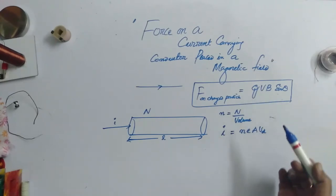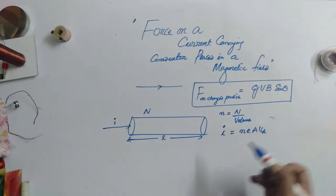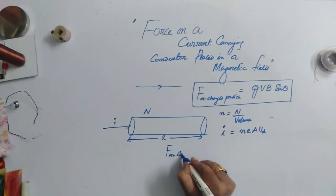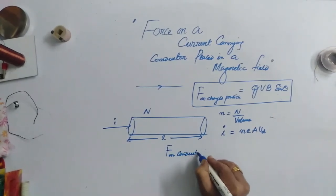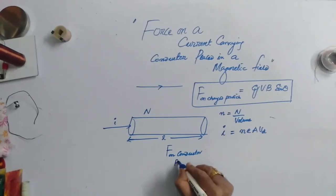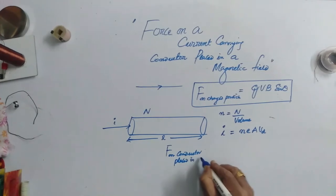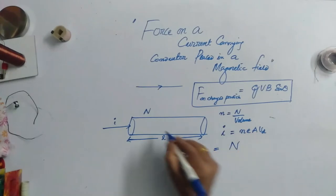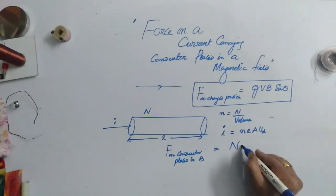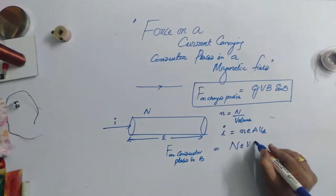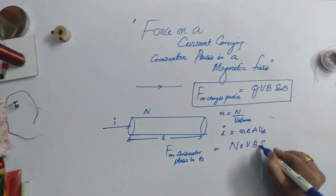Now in place of this Q, I should have written N times Q, capital N times Q. So force on a conductor placed in magnetic field should be N times... As the charged particles are electrons only, I can write N, E, V, B, sin theta.